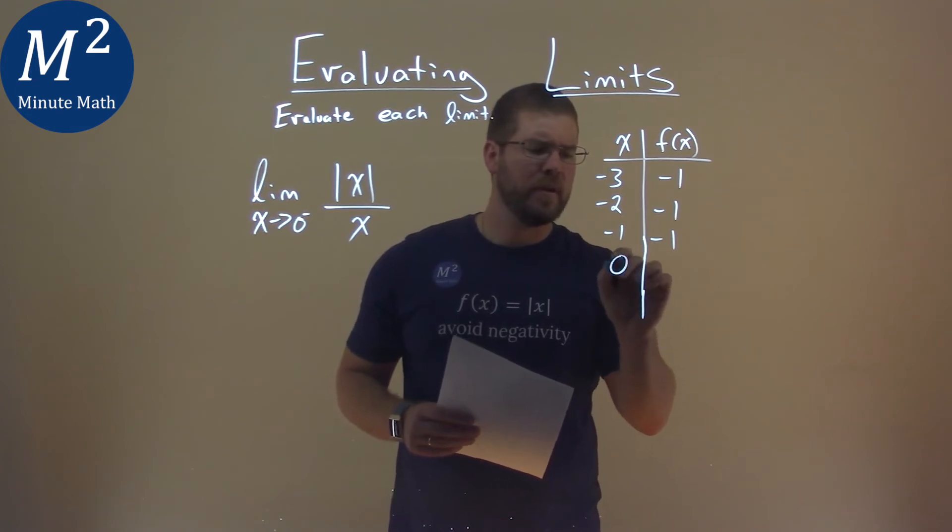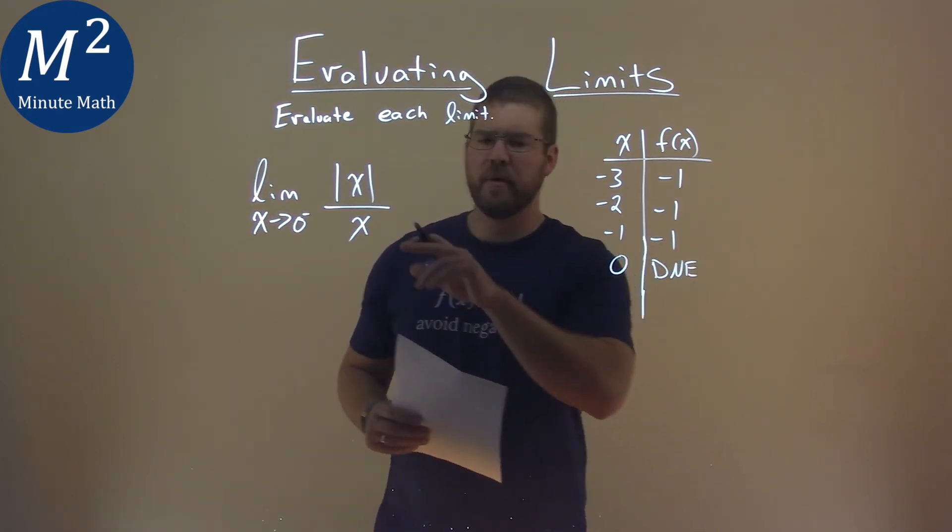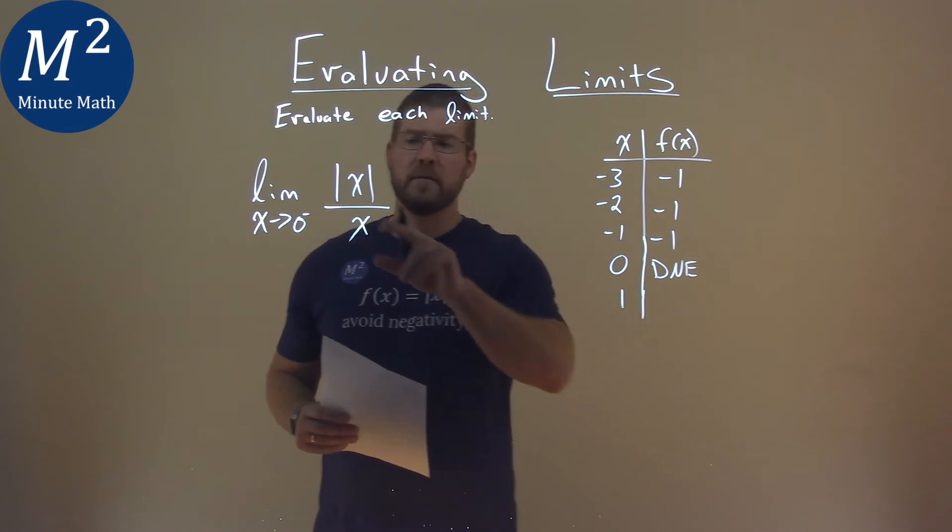0, we can't really put in there, it does not exist, right? We can't divide it by 0. But if we put a positive 1 in, absolute value of 1 is 1, divided by 1 is 1.